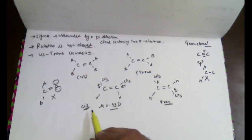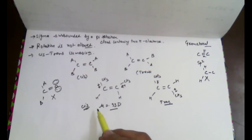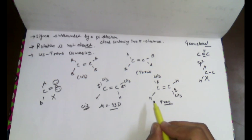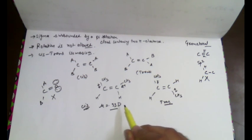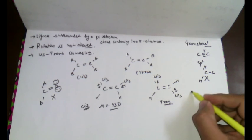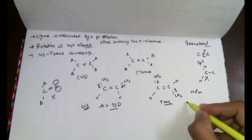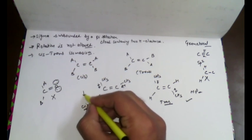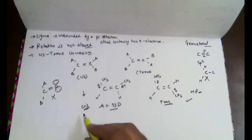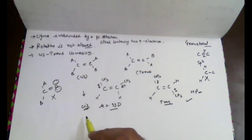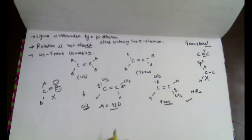In the case of melting point in the solid state, trans is observed to have a higher melting point than the cis form. Trans has more melting point while cis has a lower melting point. This is all about cis and trans isomers.